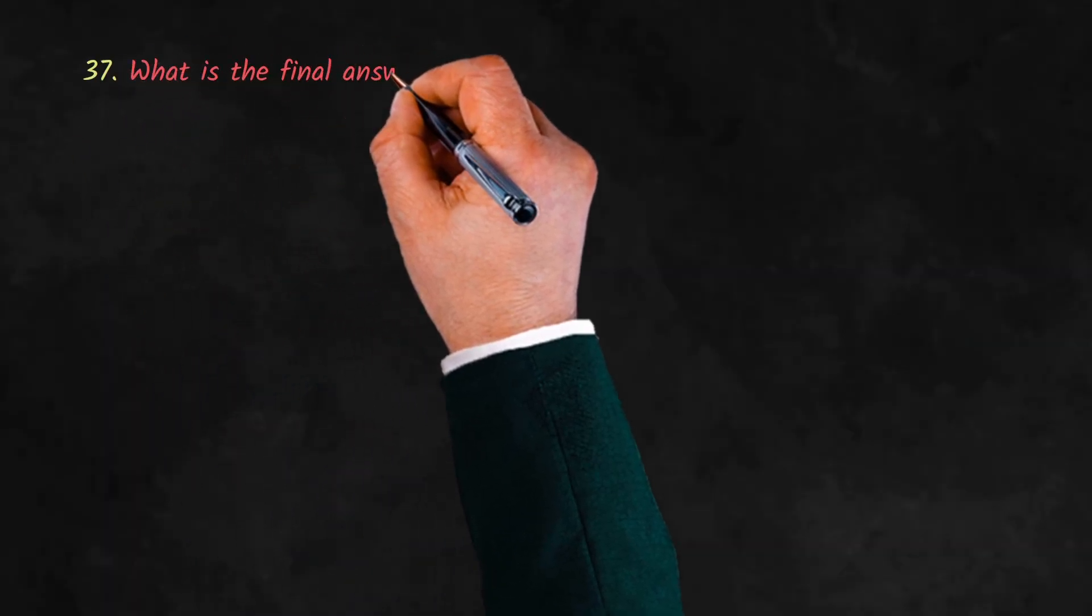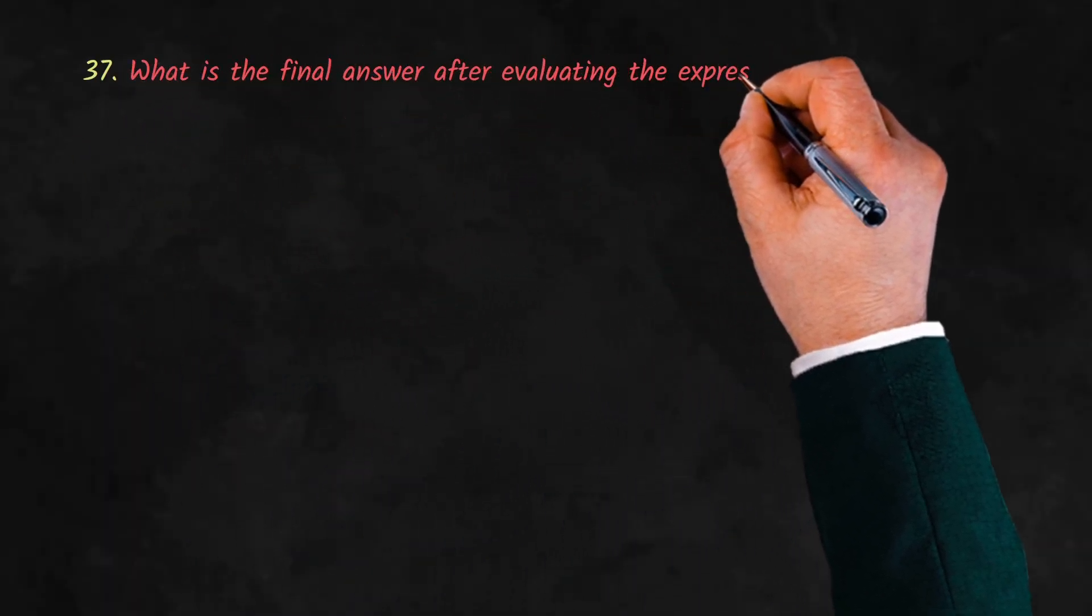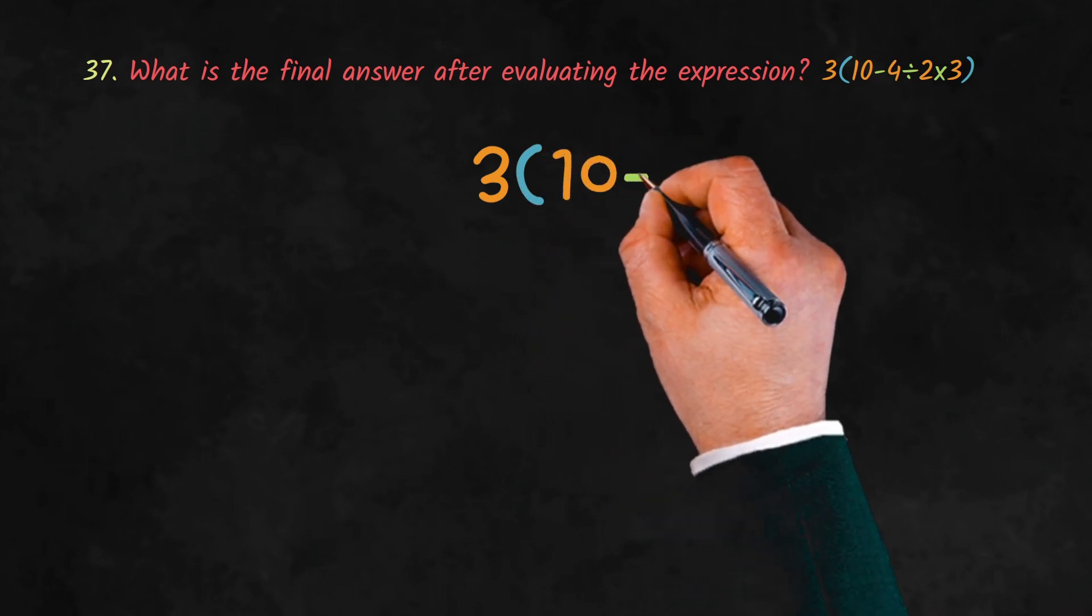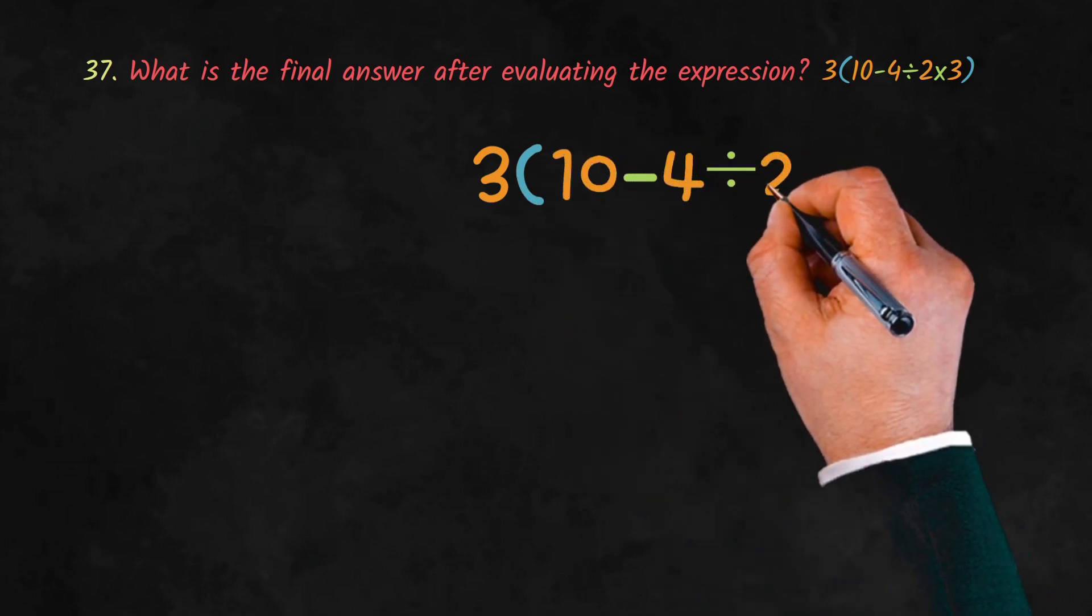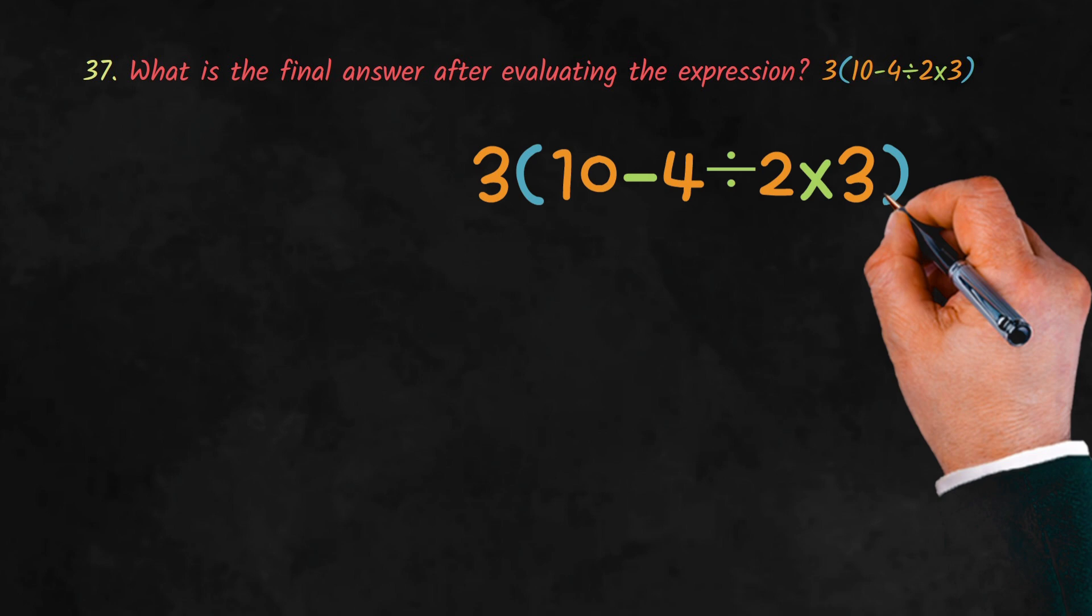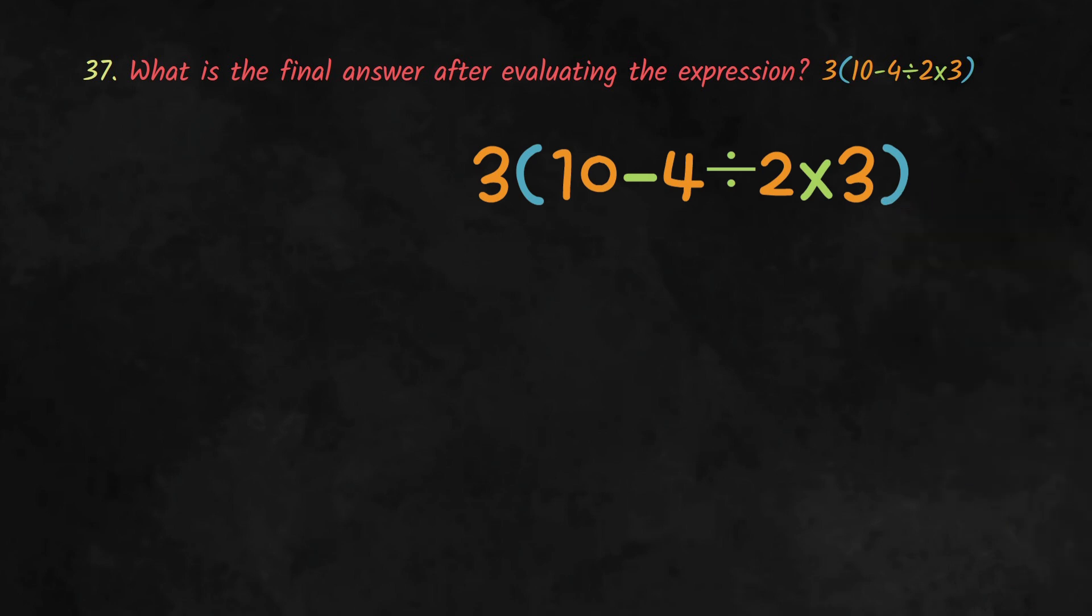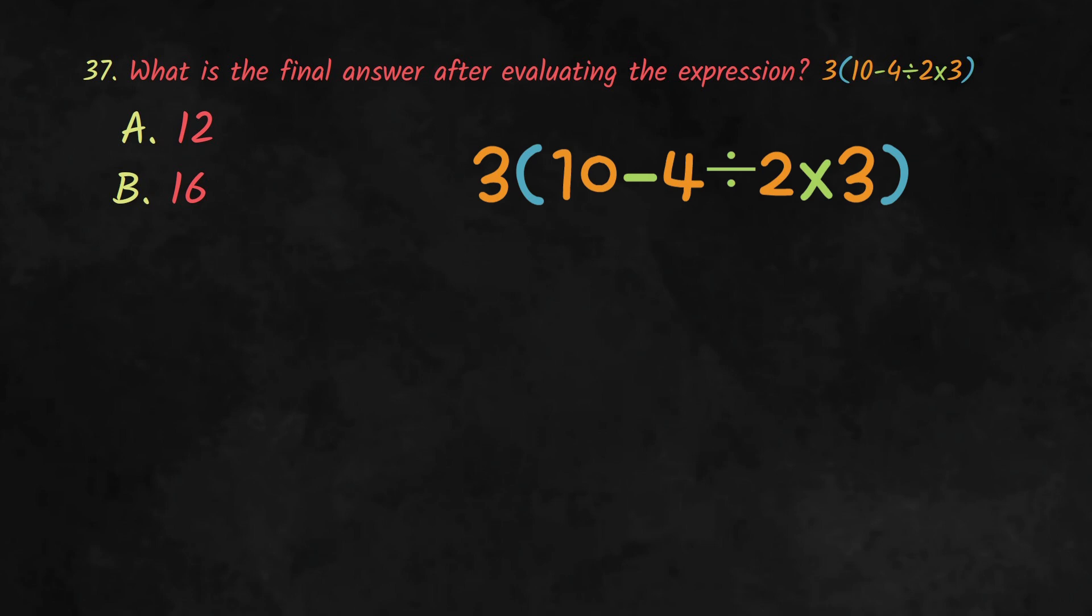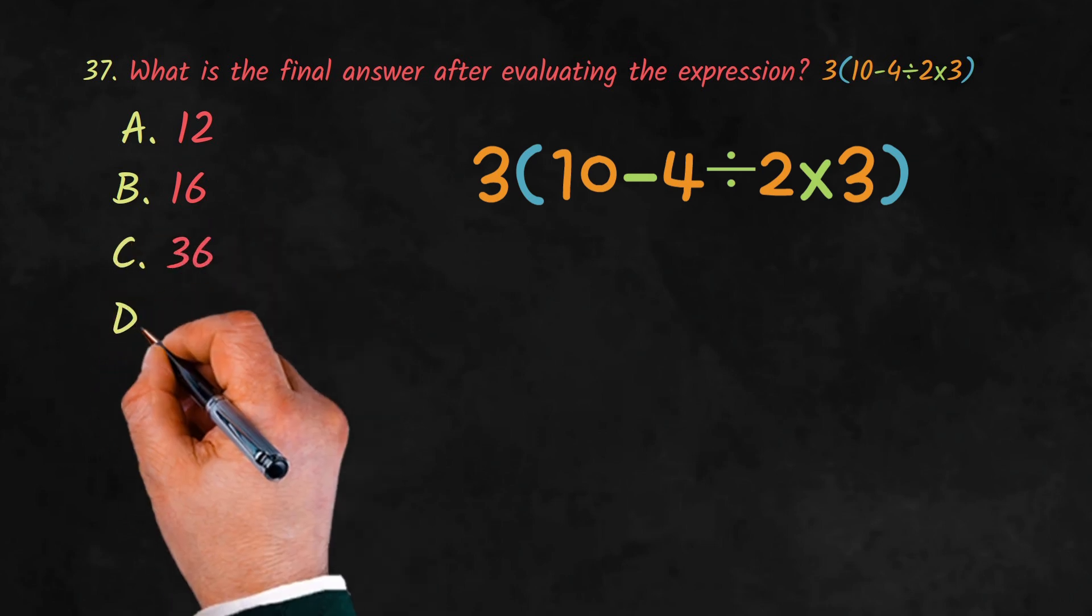What is the final answer after evaluating the expression? 3(10 - 4 ÷ 2 × 3). Here are the answer choices: A. 12, B. 16, C. 36, D. 48.